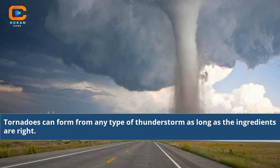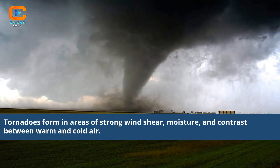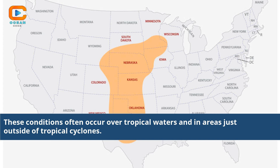Tornadoes can form from any type of thunderstorm as long as the ingredients are right. Tornadoes have been known to occur in all 50 states, and have even been seen in Canada and Mexico. Tornadoes form in areas of strong wind shear, moisture, and contrast between warm and cold air. These conditions often occur over tropical waters and in areas just outside of tropical cyclones.